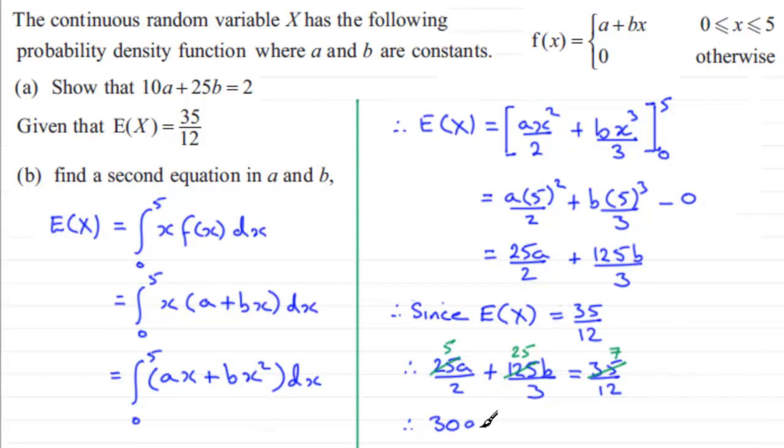And then for the second term, if I multiply this by 12, 3 will cancel into 12 four times, and 25 times 4 is 100, so you've got 100b. And finally, if I multiply this term by 12, I'm just left with the 7. So there's my second equation in a and b.